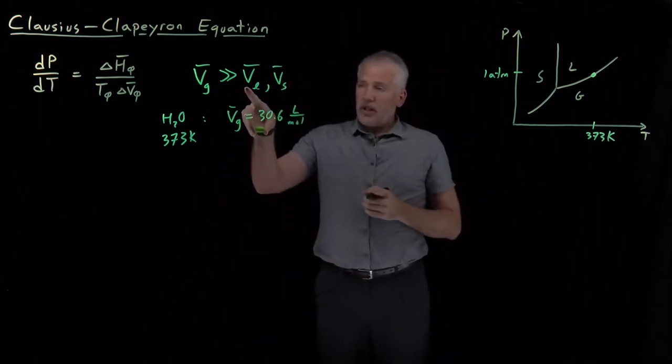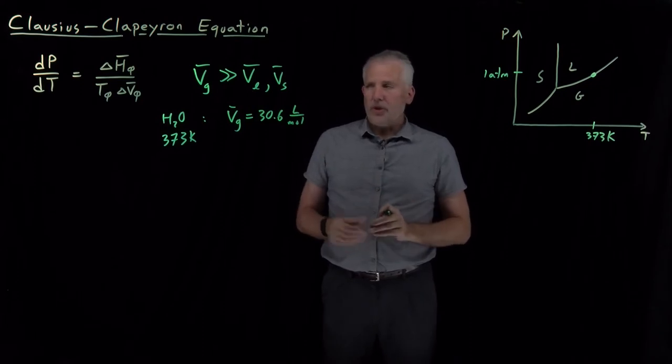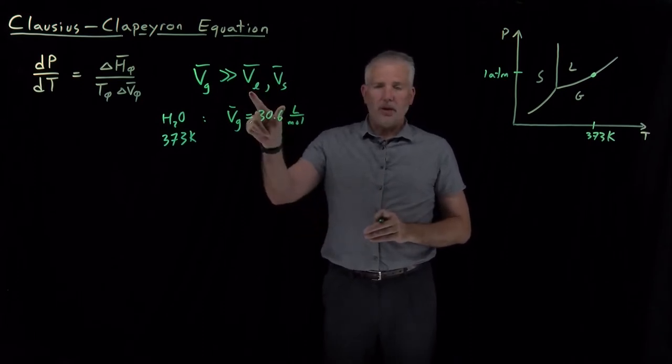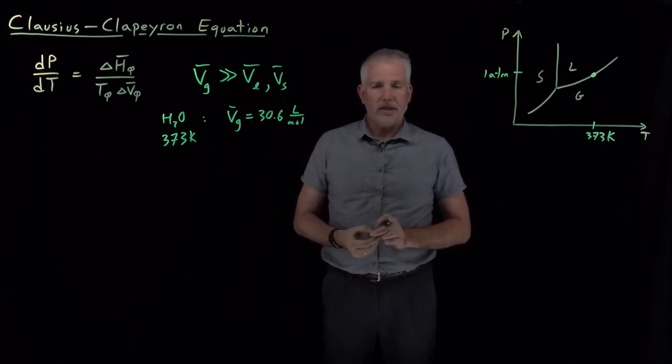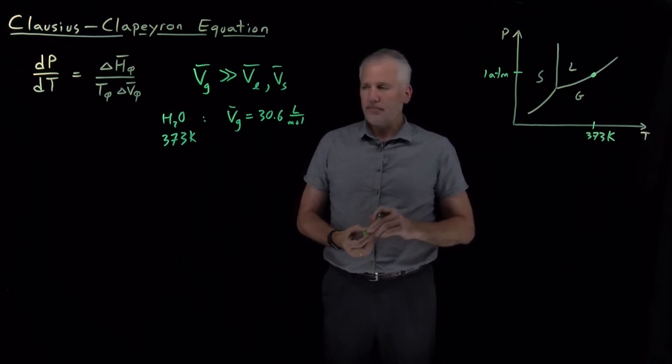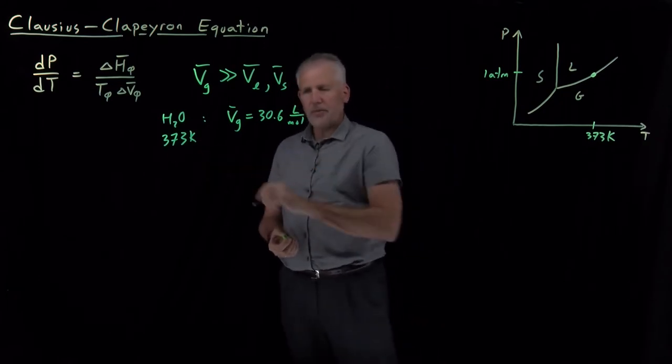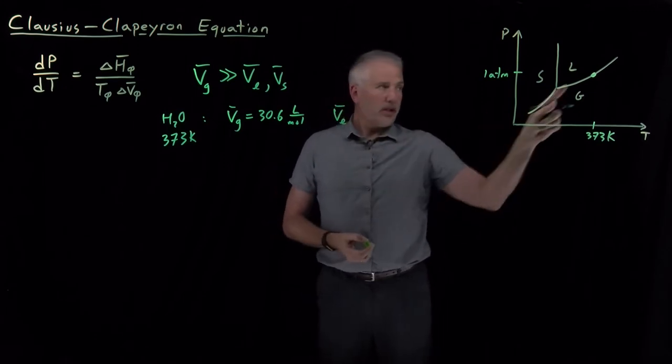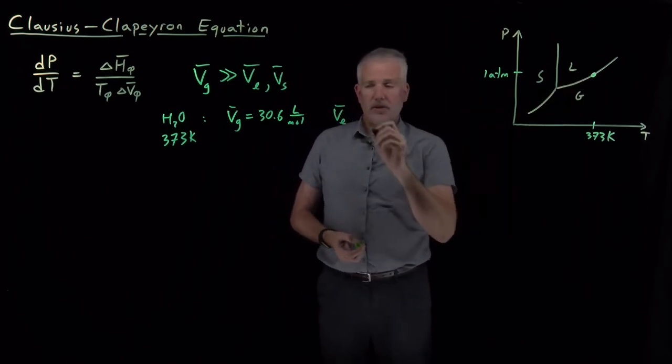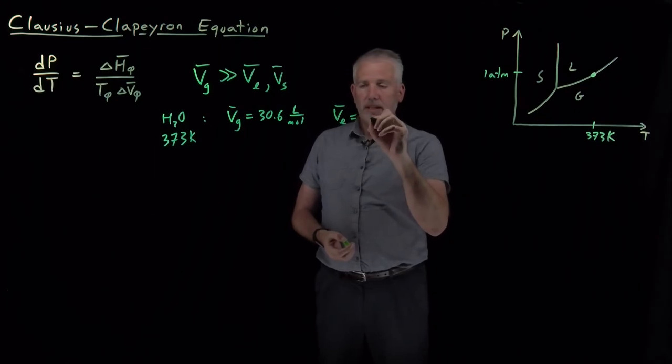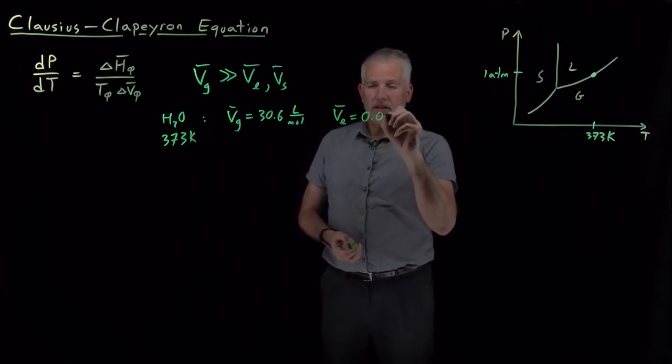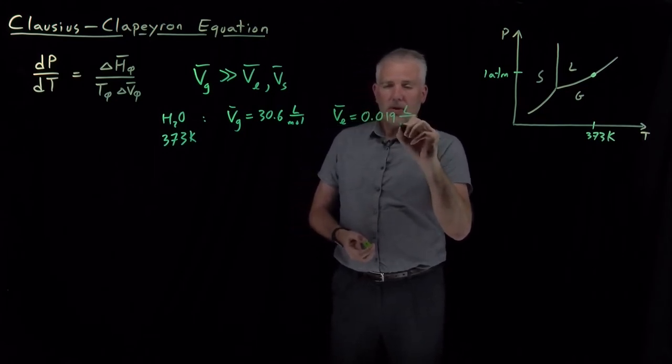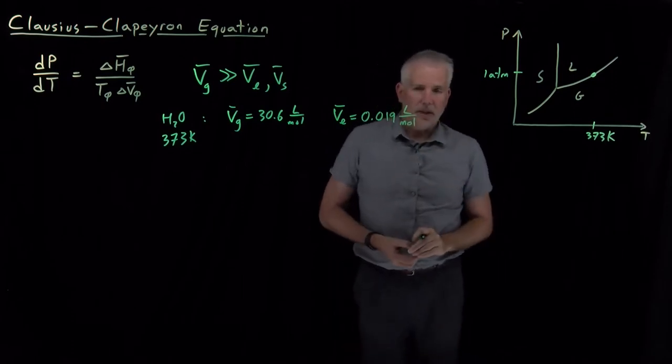The liquid, on the other hand, at room temperature, you can tell me how much volume a mole of liquid water takes up. A mole of water weighs 18 grams. So, if its density were 18 grams per milliliter, it would take up 18 milliliters. At 373 Kelvin, it's expanded a little bit. At that high temperature, the liquid on this side of the coexistence curve takes up about 19 milliliters. So, I'll write that in liters as 0.019 liters per mole rather than 19 milliliters per mole.